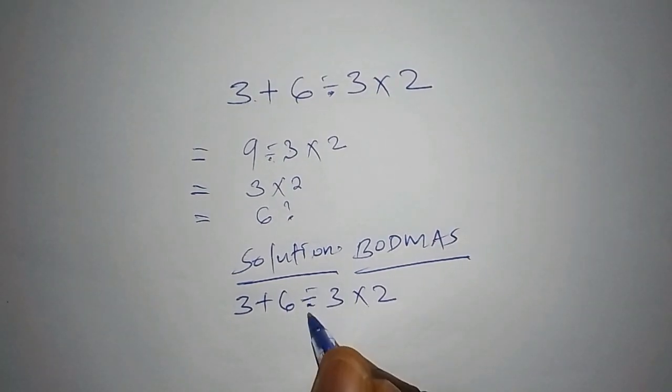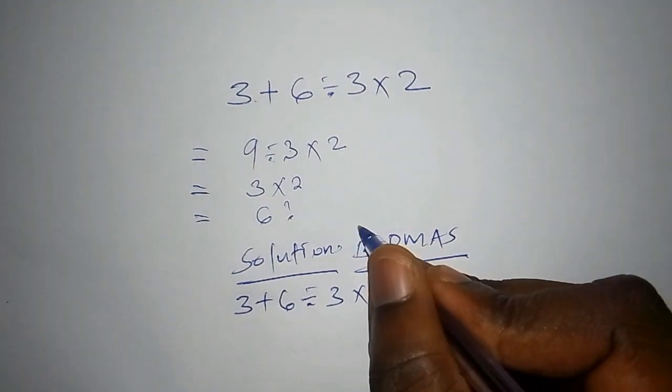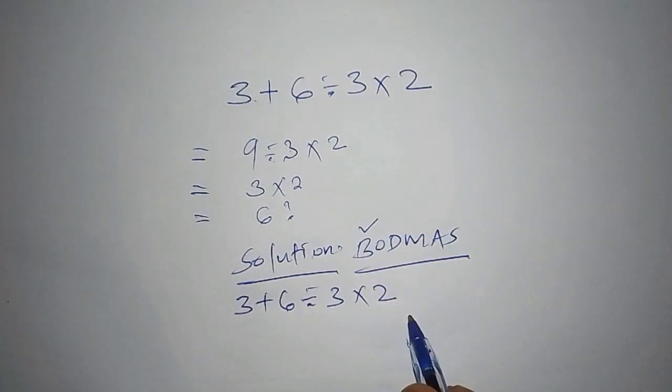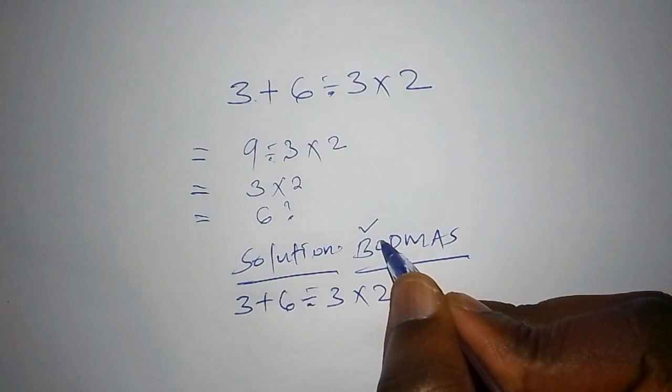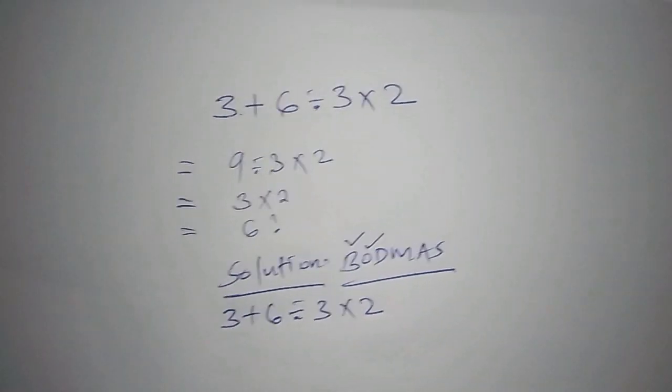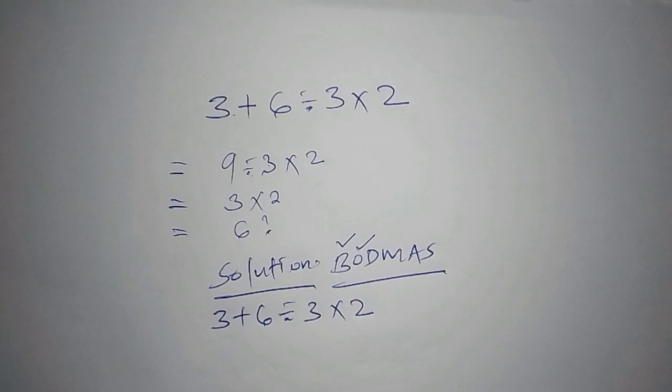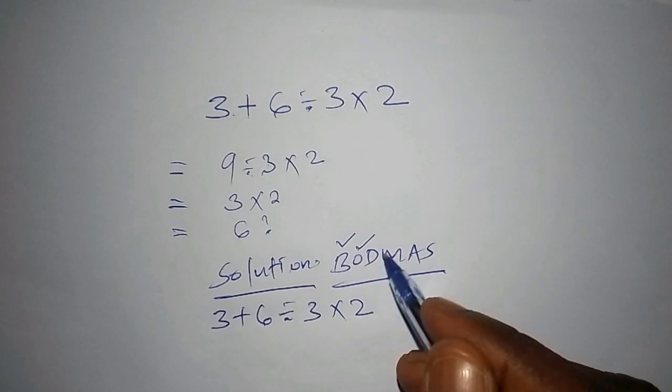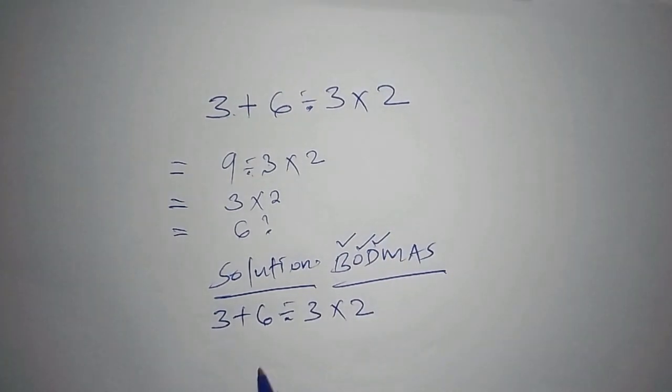Once we have this math problem, we're now looking at the order of operations. We start with the bracket, but we don't have a bracket here. Move to 'of,' we no longer have 'of' there. So from there now we move to the next area, whereby we shall talk about division.